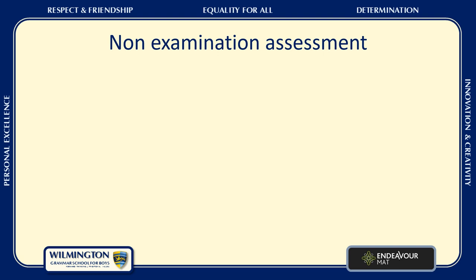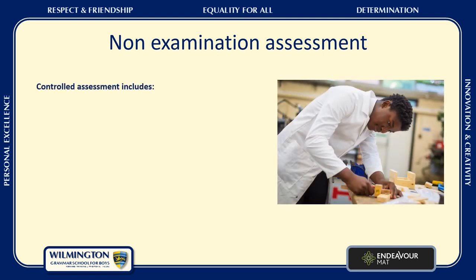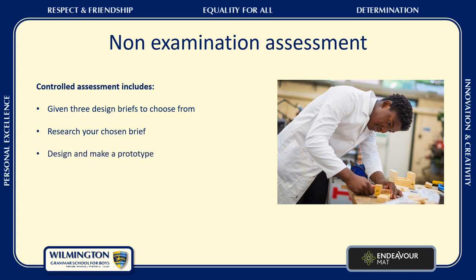The non-examination assessment, also known as a controlled assessment, goes through a number of different stages. Initially, at the end of Year 10, you'll be given three design briefs to choose from. You'll research your chosen brief and develop a client. You'll design, draw, model, and make a prototype of your design. You will then develop that design further after some testing and then manufacture your final product, and finally evaluate your final product.